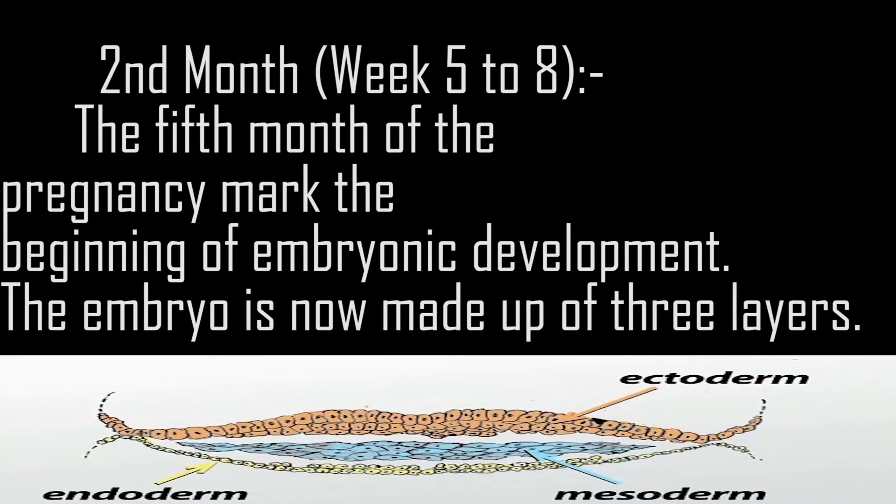Second month, week 5-8. The 5th week of pregnancy marks the beginning of embryonic development. The embryo is now made up of 3 layers.